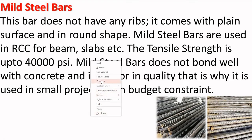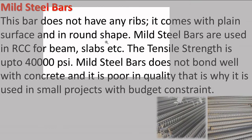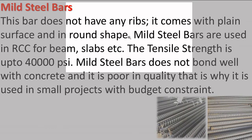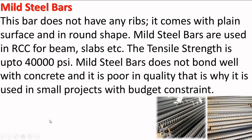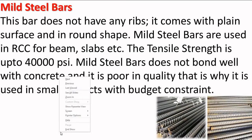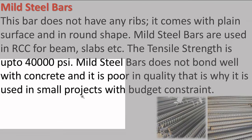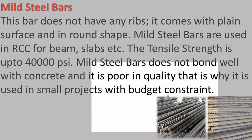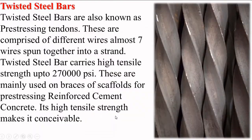Next is mild steel bars. This bar does not have any ribs; it comes with a plain surface and in round shape. Mild steel bars are used in RCC for beams, slabs, etc. The tensile strength is up to 40,000 psi. Mild steel bars do not bond well with concrete and are poor in quality, which is why they are used in small projects with budget constraints.